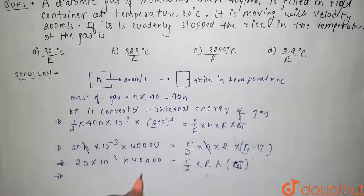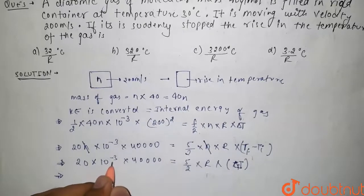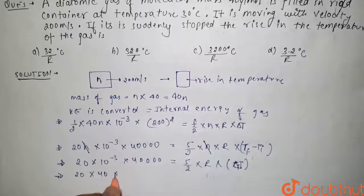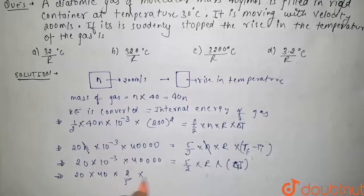We will get, since this is 10 to the power minus 3, it will become 20 times 40 times 2 by 5 times 1 by R.